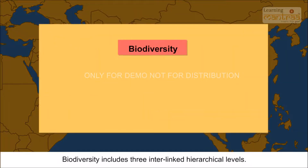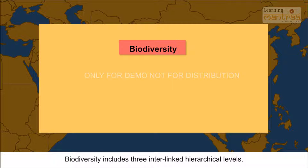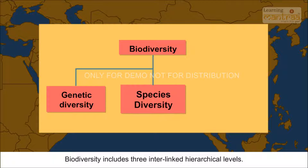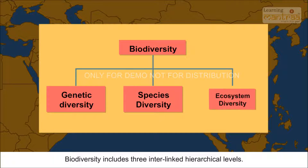Biodiversity includes three interlinked hierarchical levels. These are genetic diversity, species diversity, and ecosystem or ecological diversity.